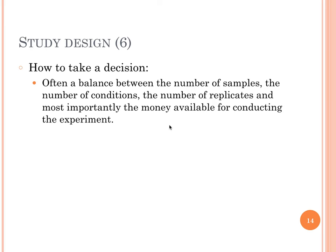So, as a summary, when we talk about study design, how do we take the decision? Well, it has to be a balance between the number of samples, the number of conditions, the number of replicates, and of course, because science is most often publicly funded, a limiting factor will always be the money.